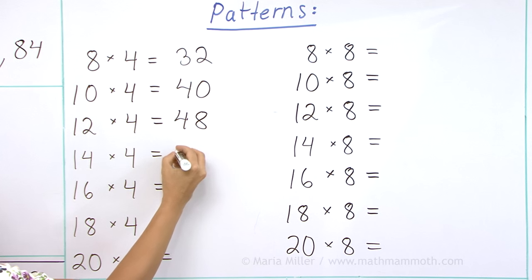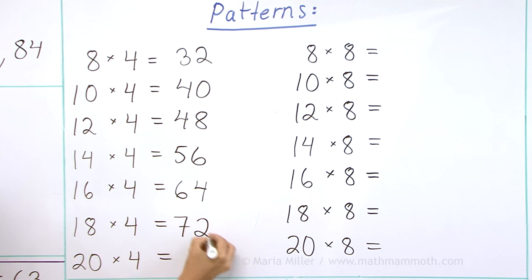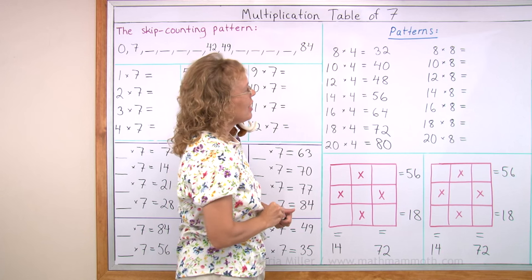Eight more would be 56, and eight more would be 64, and then 72, and then 80. Now how about here?